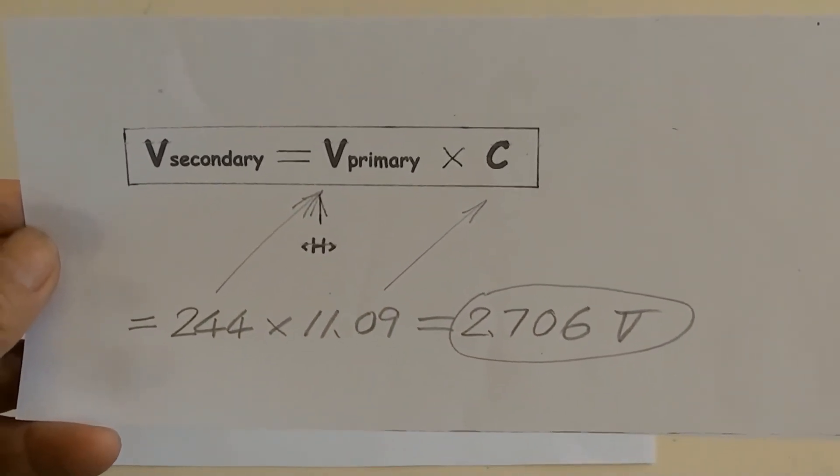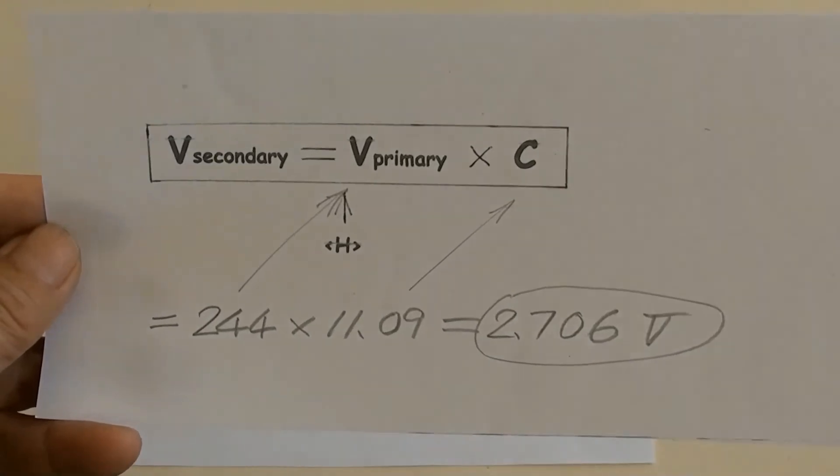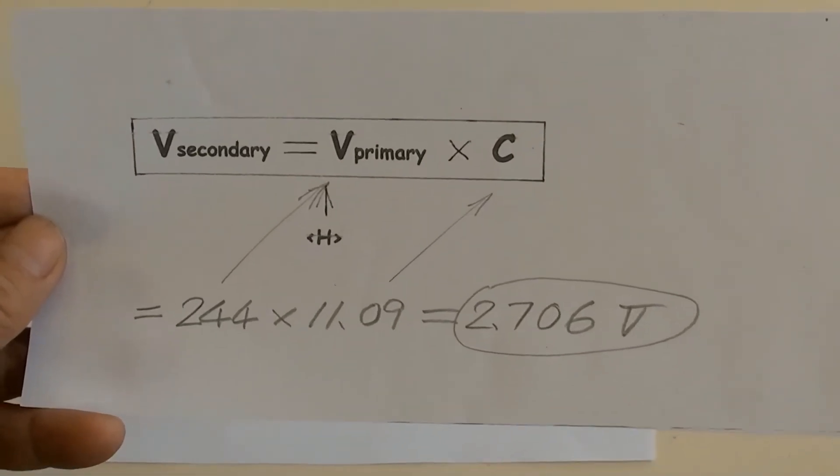This is the way to use a multimeter indirectly to measure a transformer's high voltage value.